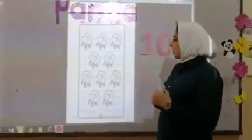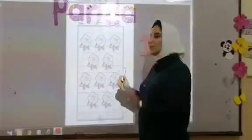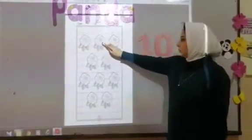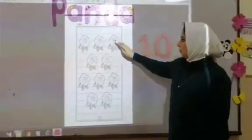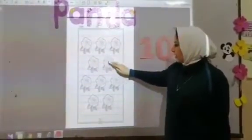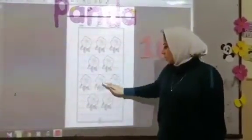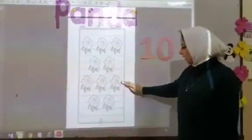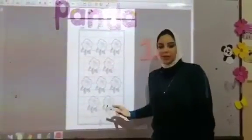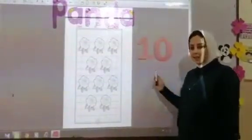Let's count how many flowers we have here: 1, 2, 3, 4, 5, 6, 7, 8, 9, 10. So our new number is 10.